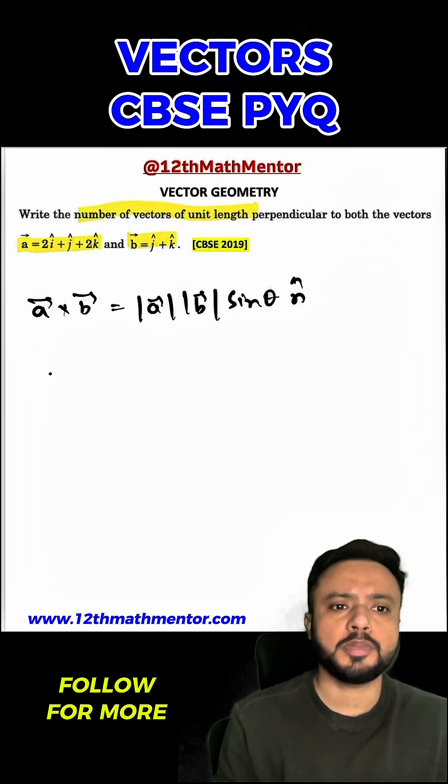So in order to solve this question, first of all, we are going to find A vector cross B vector, which would be equal to I, J, K, 2, 1, 2, 0, 1, 1.